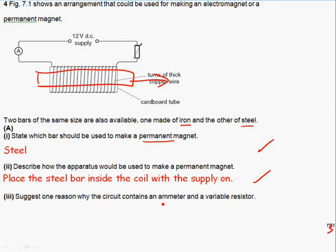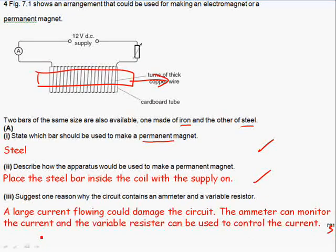Suggest one reason why the circuit contains an ammeter and a variable resistor. You could vary the current with the ammeter. If you had a very large current flowing through this coil, it could heat up, melt, cause a fire, could be dangerous, could damage the equipment. Using the ammeter and the variable resistor in unison, you'd be able to control the amount of current flowing and stop damage from happening.